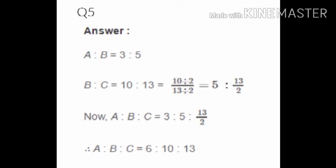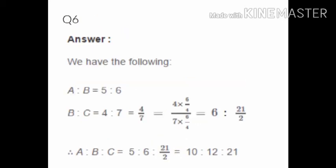To find a:b:c when a:b = 3:5 and b:c = 10:13, first reduce b:c to match: 10:13 simplifies to 5:13/2. Writing together: a:b:c = 3:5:13/2. Multiplying all terms by 2 to clear the fraction gives 6:10:13. So the final answer is a:b:c = 6:10:13.